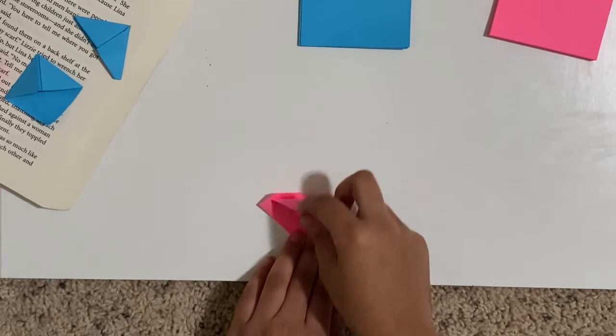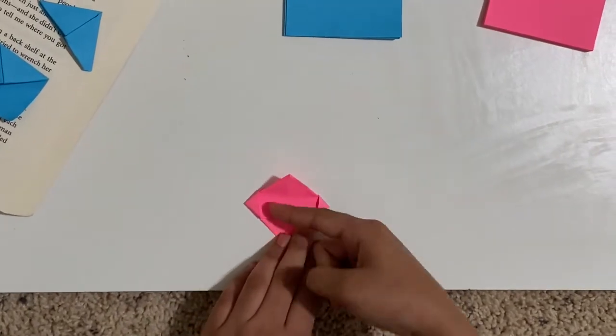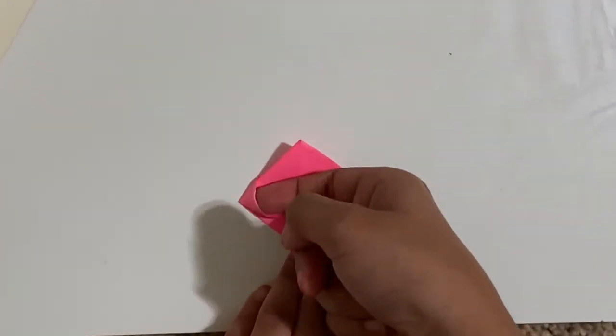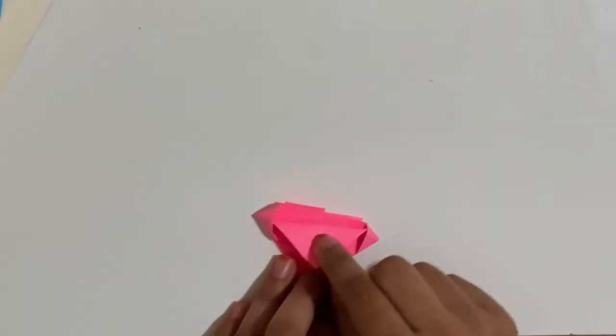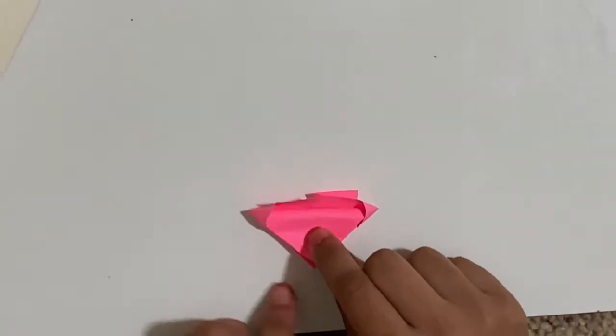But then you're going to start to notice that these two triangles right here, they're kind of like pockets. They're not going to want to fold, which is what we want. So just like that.